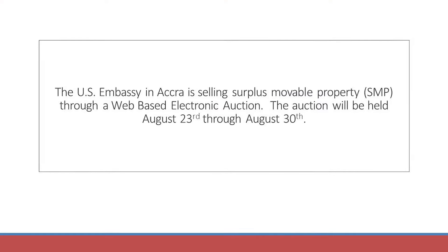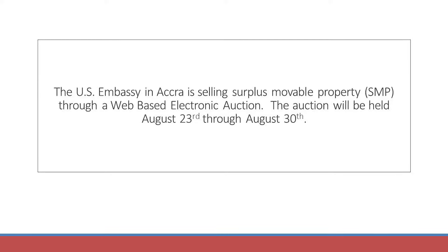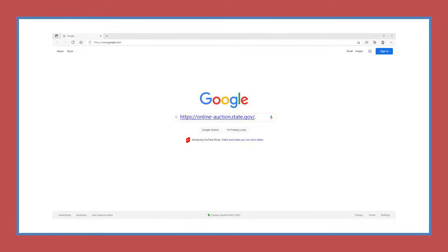The US Embassy in Ghana sells surplus movable property (SMP) through a web-based electronic auction. Learn how to register and take part in the auction. Step 1: to participate in the auction, go to https://online-auction.state.gov.